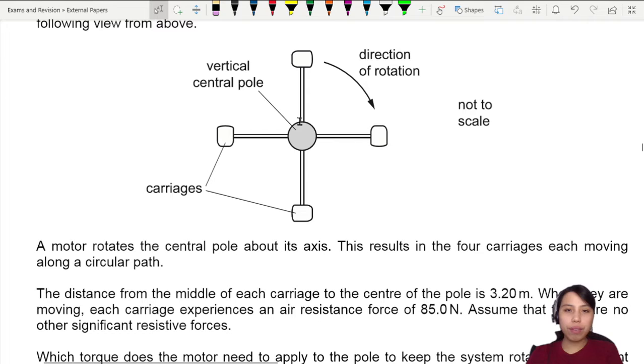The distance is given as 3.2 meters. We're going to label that distance from middle of each carriage to the center of the pole. So this is going to be 3.2 over that. Let's label 3.2 meters.